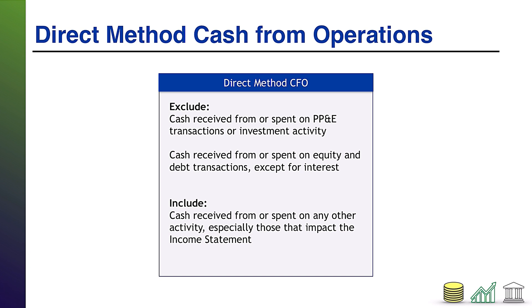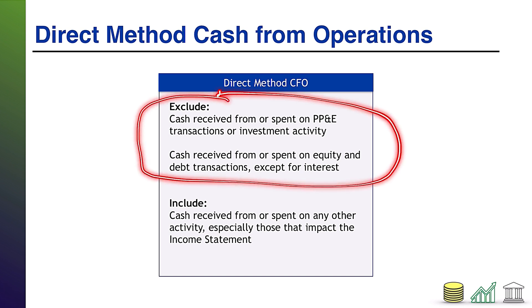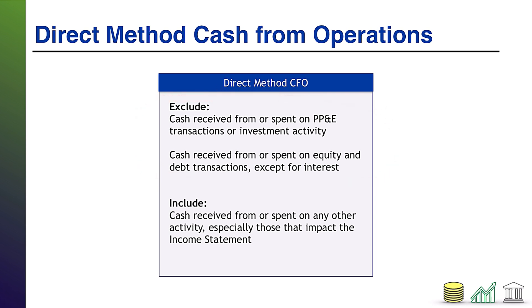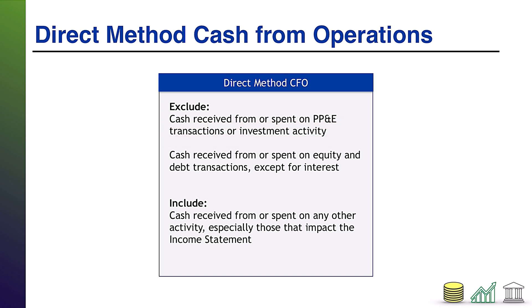Here I have a summary of how you approach this. I start by listing the things you don't include in the operating cash flow section under the direct method. One of the things we don't include is cash received from or spent on PP&E transactions or other investment activity. Specifically, what I'm describing here is CFI — cash flows from investing activities. You do not put anything related to investing activities, PP&E transactions, or other actual investments, debt or equity investments into your CFO section.